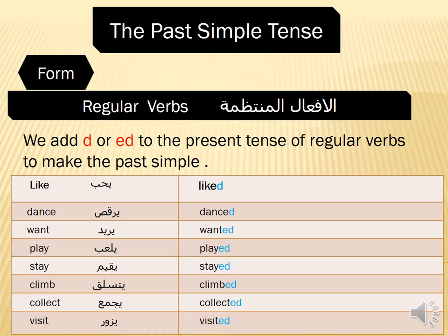Today we are going to explain the past simple tense — زمن الماضي البسيط. Before we start explaining the past simple tense, I'd like to tell you that verbs can be regular or irregular verbs.